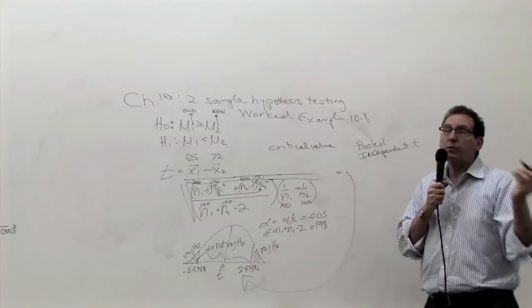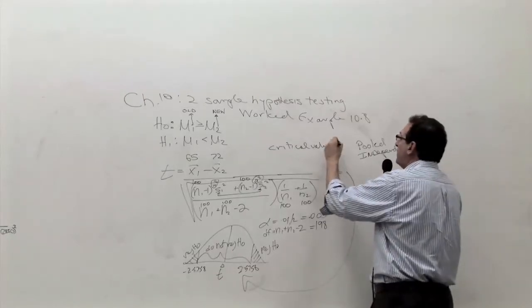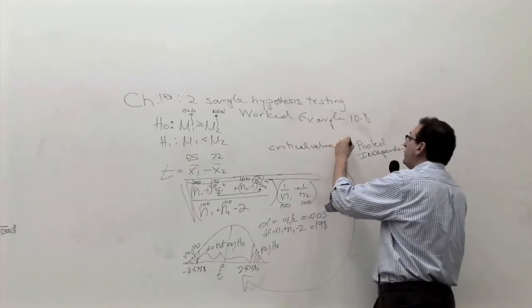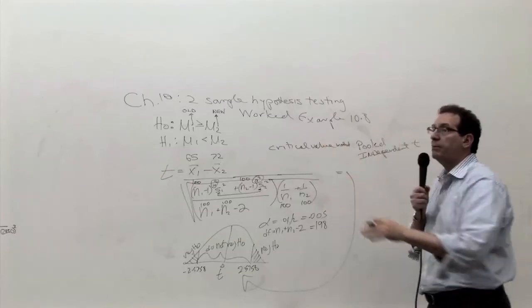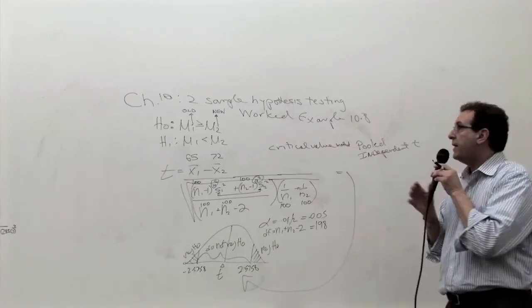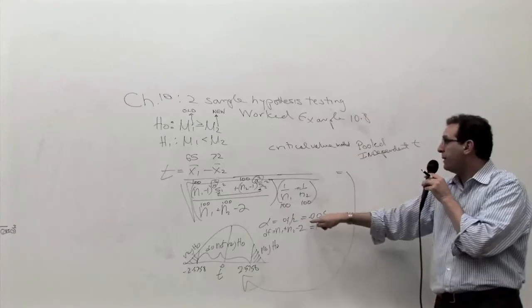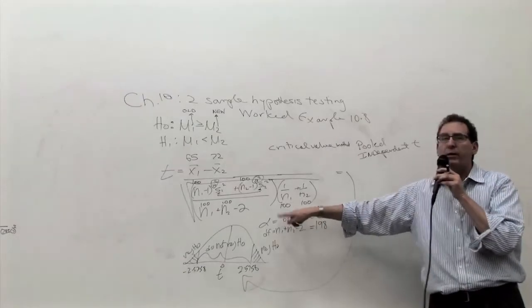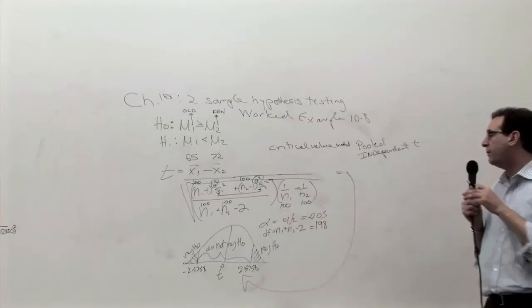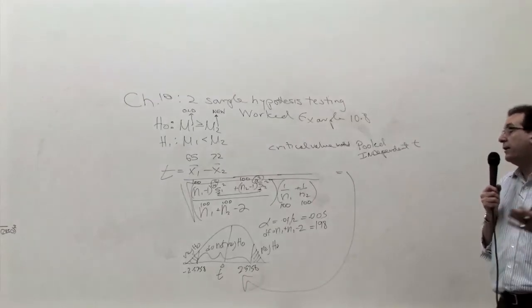As opposed to the p-value method, which we'll do separately. The p-value method, you can't calculate. You simply throw all the numbers in the PHStat or something comparable, and the computer gives you a p-value. And then you take that p-value and you compare it to the alpha of 0.01. That's the p-value method. But right now, we're just doing it by the simpler method.